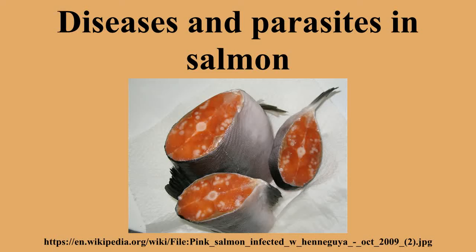The parasite is then carried in the salmon until the next spawning cycle. The Myxosporean parasite that causes whirling disease in trout has a similar life cycle. However, as opposed to whirling disease, the Henneguya infestation does not appear to cause significant incapacitation of the host salmon.